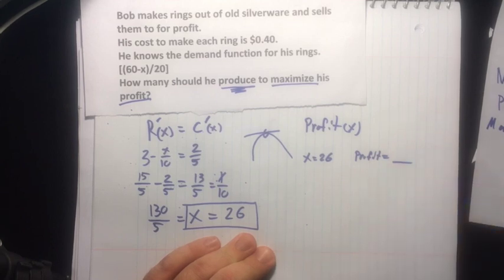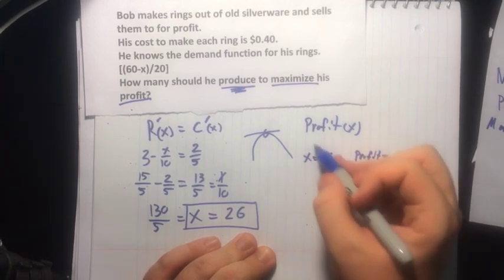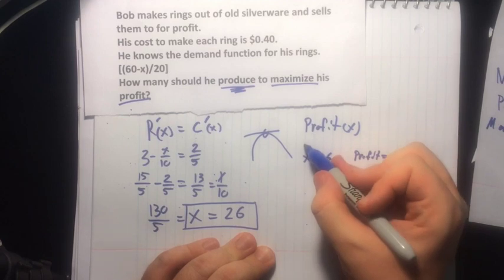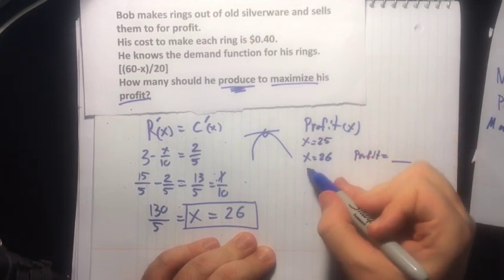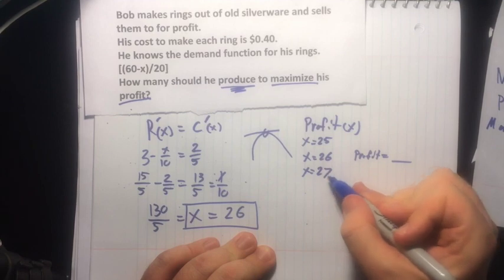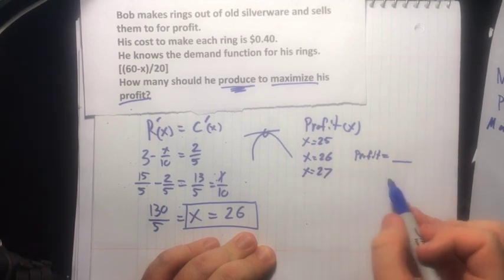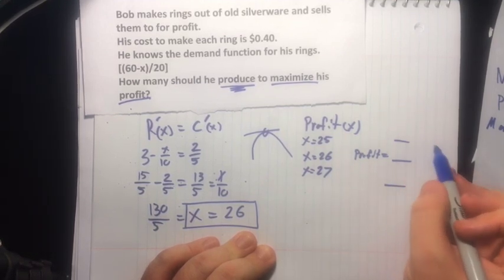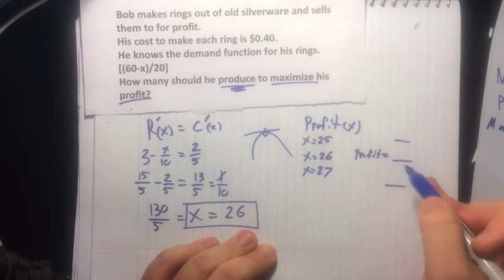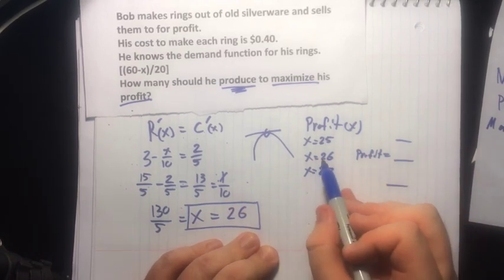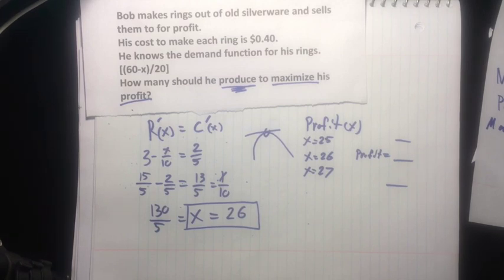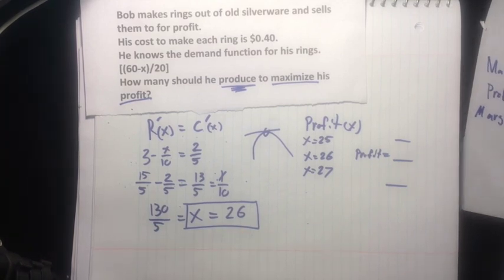But then also, to prove that this is indeed the best one, we'll just go below it real quick: 25 and x equals 27. And we'll see what these numbers are. And they're guaranteed, if everything else is correct, to be lower than our profit value for x equals 26 when we're producing 26 units.